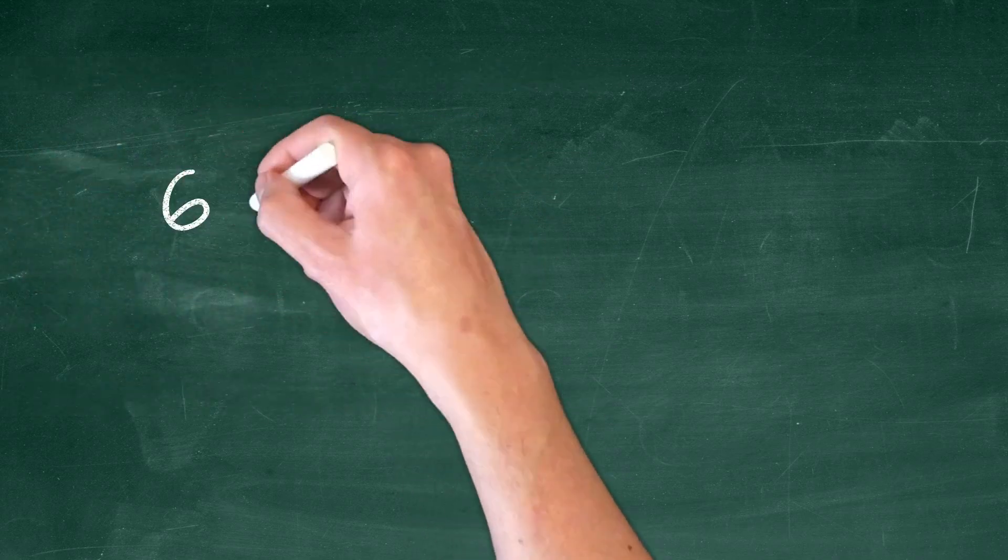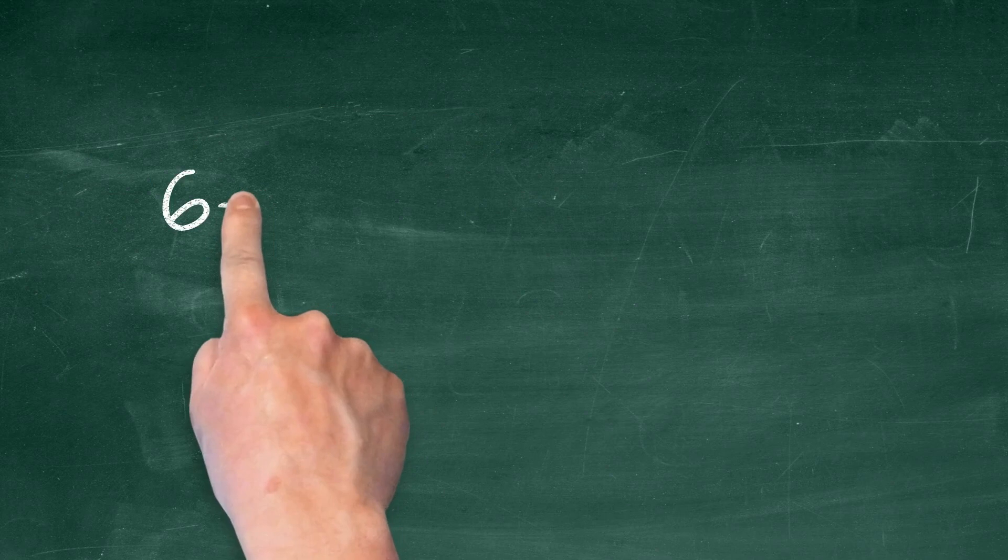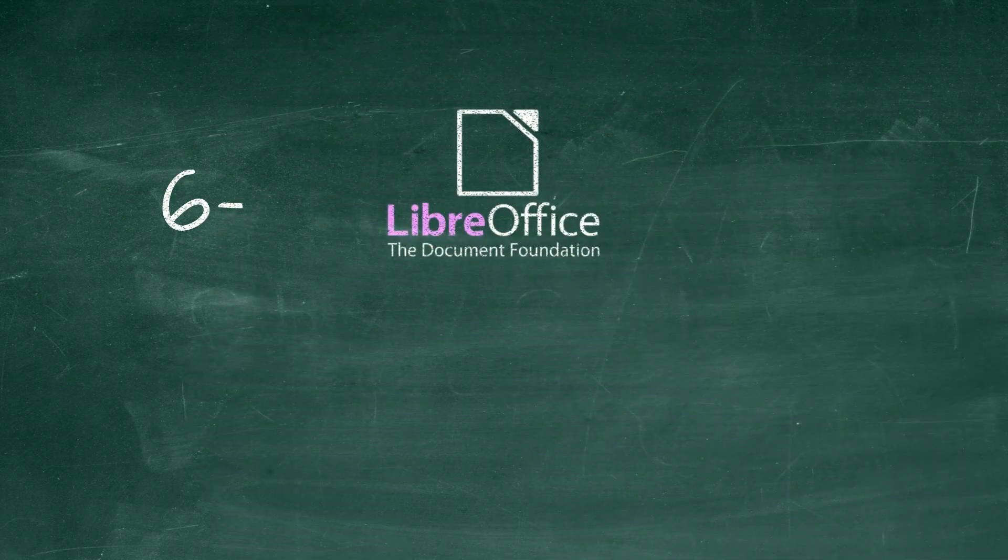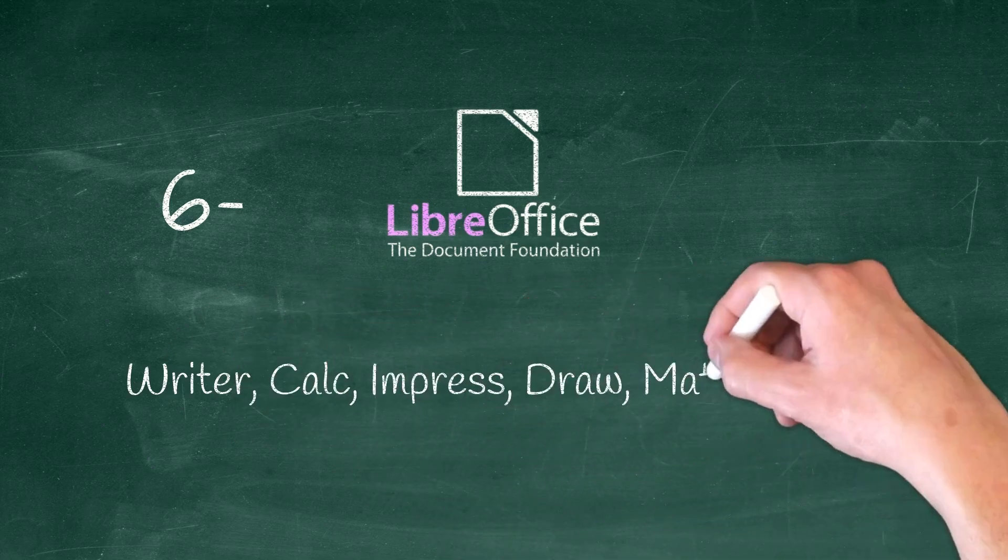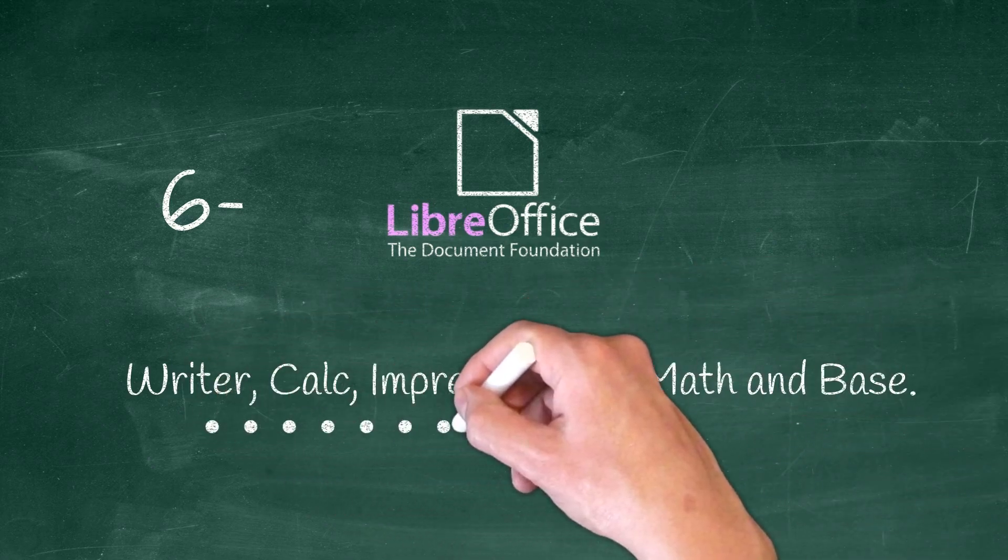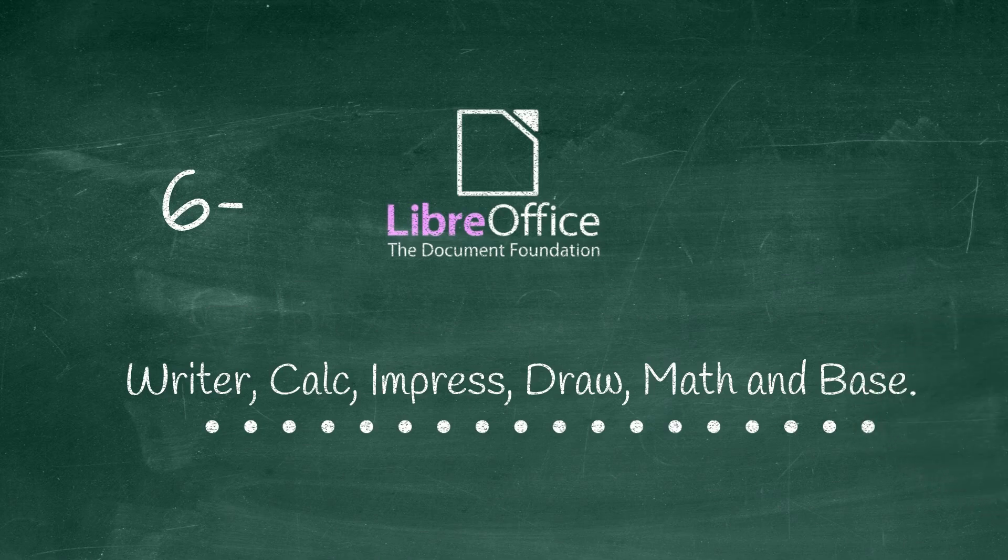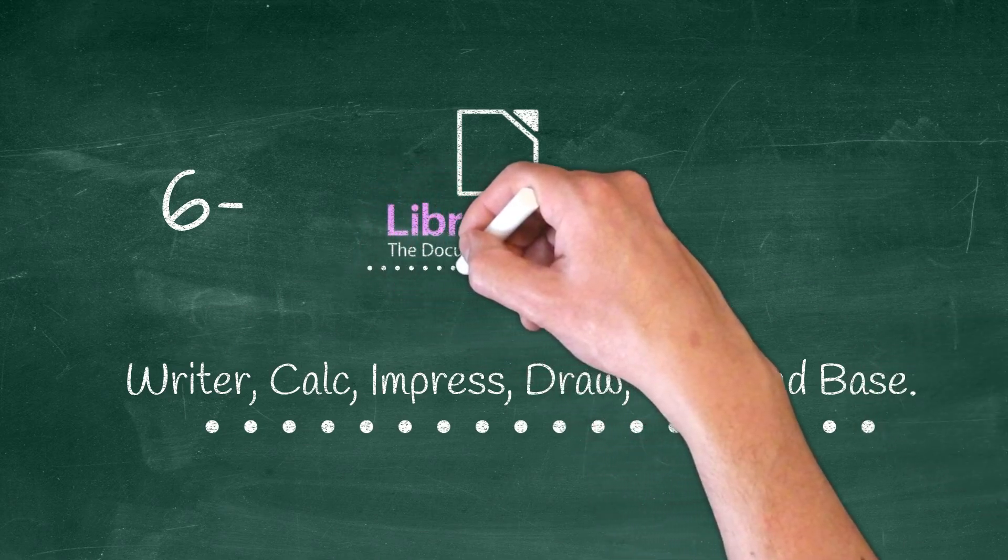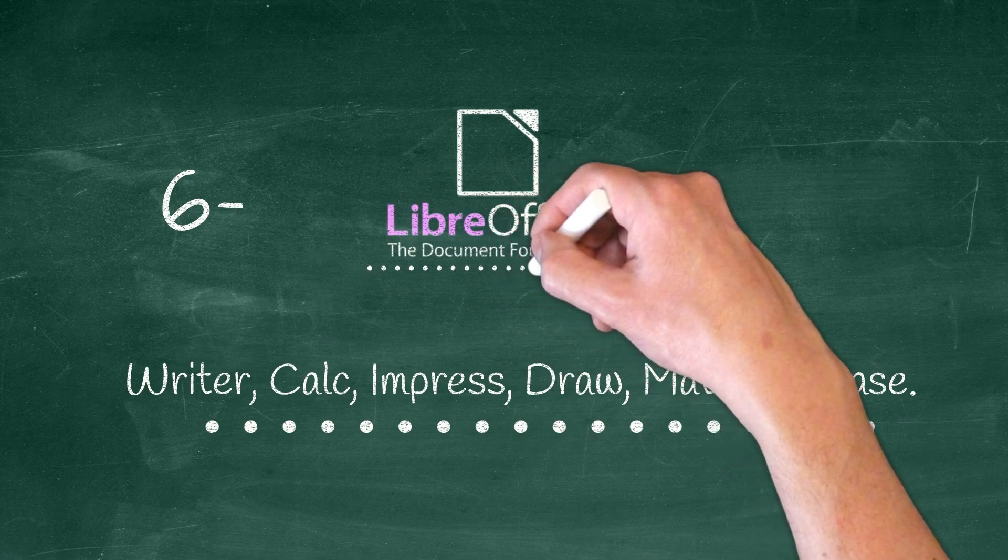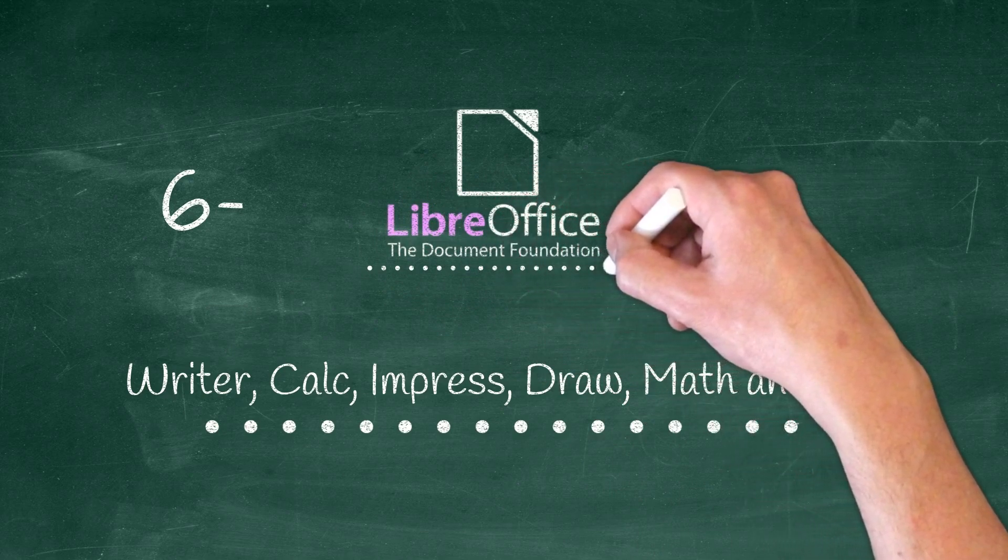Number 6, LibreOffice. LibreOffice is the most actively developed open source office suite for Linux. It has mainly six modules: Writer, Calc, Impress, Draw, Math, and Base. And every one of them supports a wide range of file formats. LibreOffice also supports third-party extensions. It is the default office suite for many of the Linux distributions.